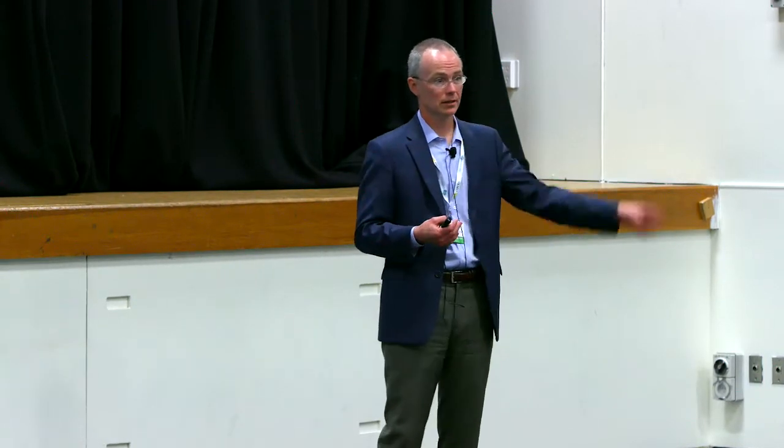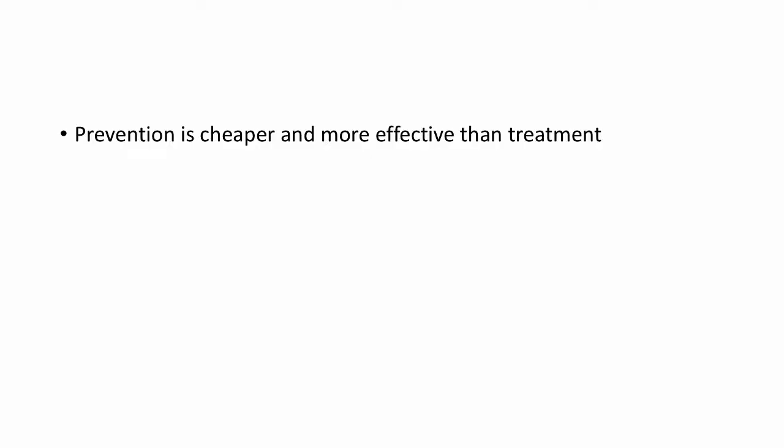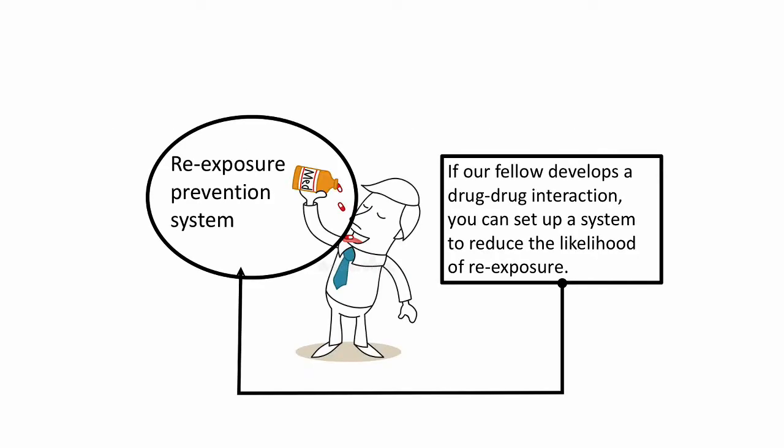The same applies to drug-disease or drug-drug interactions. If you're on morphine and get prescribed an antibiotic, or if antibiotic plus warfarin is flagged, the system can prompt you to check INR more frequently or consider other process improvements. And we know that prevention is cheaper and more effective than treatment, so you can set up a system to reduce the likelihood of re-exposure.